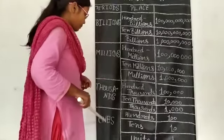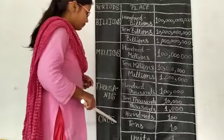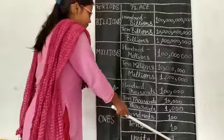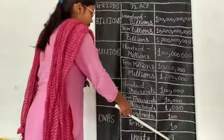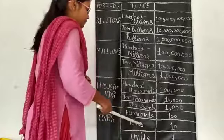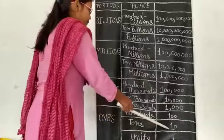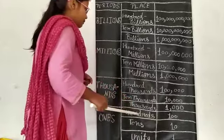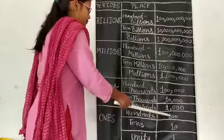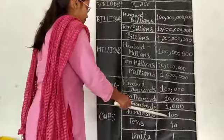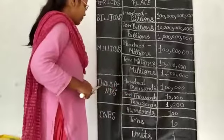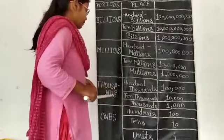First period, ones: units, tens, hundreds. Second period, thousands.